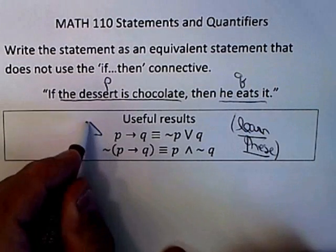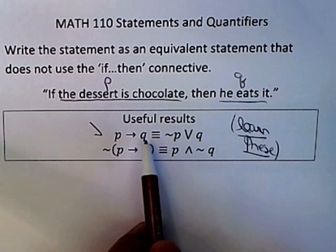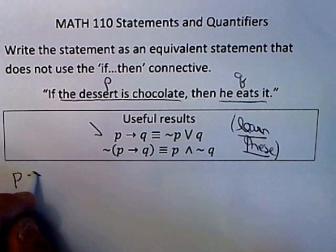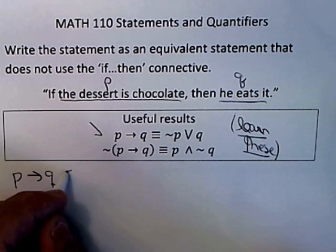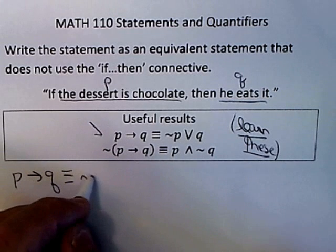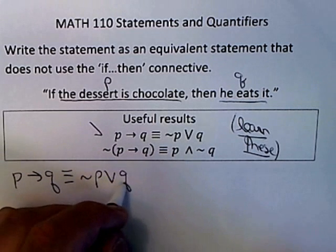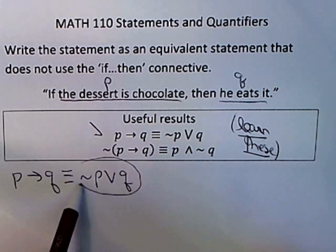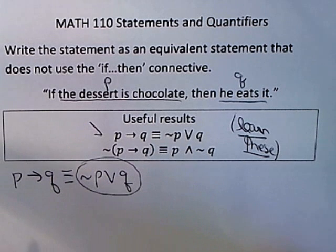So looking at this first result, it tells me how to take an implication and write it without the if-then. I'll just copy it down here so I can work with it better. Not p or q. So if I can translate this into a grammatically correct English sentence, I'll have done what they ask.